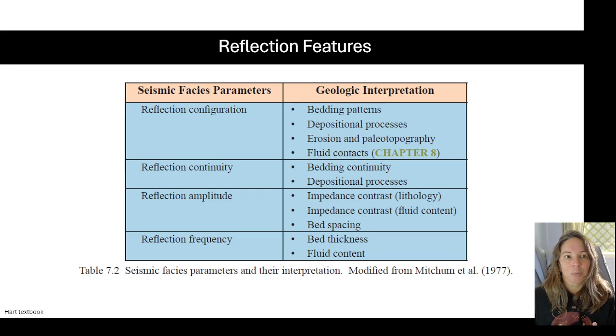With seismic facies, what we want to first focus on is the reflection parameters. In the Hart textbook, he talks about four main seismic facies parameters that we want to think about - what are we going to notice every time we look at the seismic. Those are the reflection configurations, the reflection continuity, the reflection amplitude, and the reflection frequency. All four of those seismic facies parameters we can use in our descriptions.